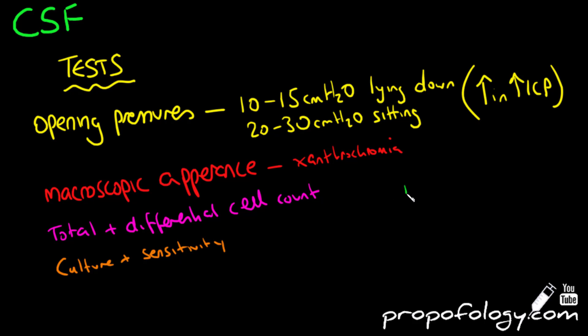You can do protein and glucose levels. You can analyze immunoglobulins within it, and that's used to detect chronic CNS inflammatory conditions. You can also do cytology to look at the character of the cells, and we'll talk about these investigations and diagnoses in a minute.